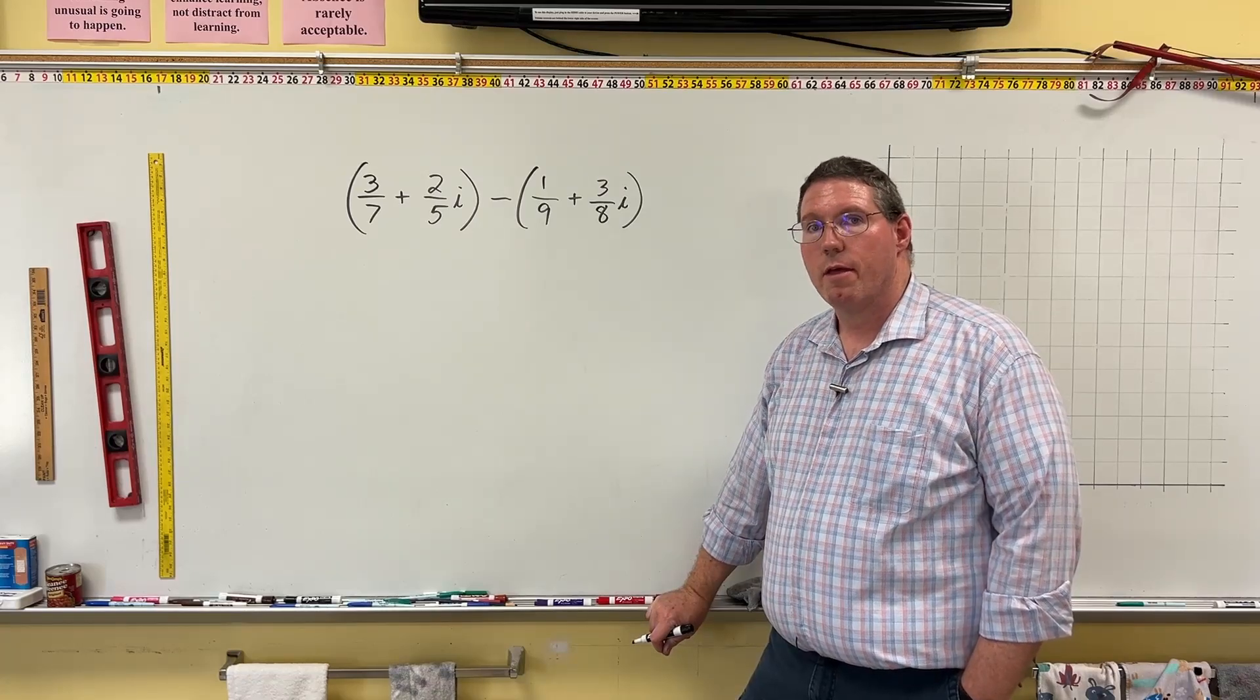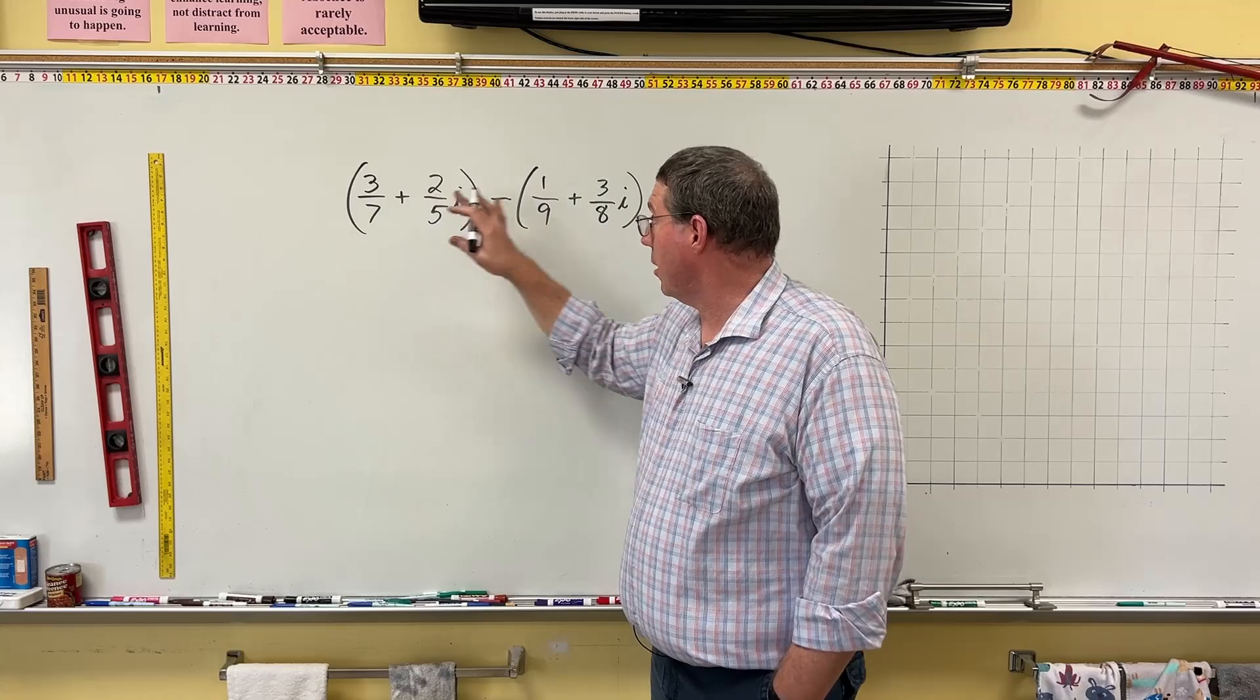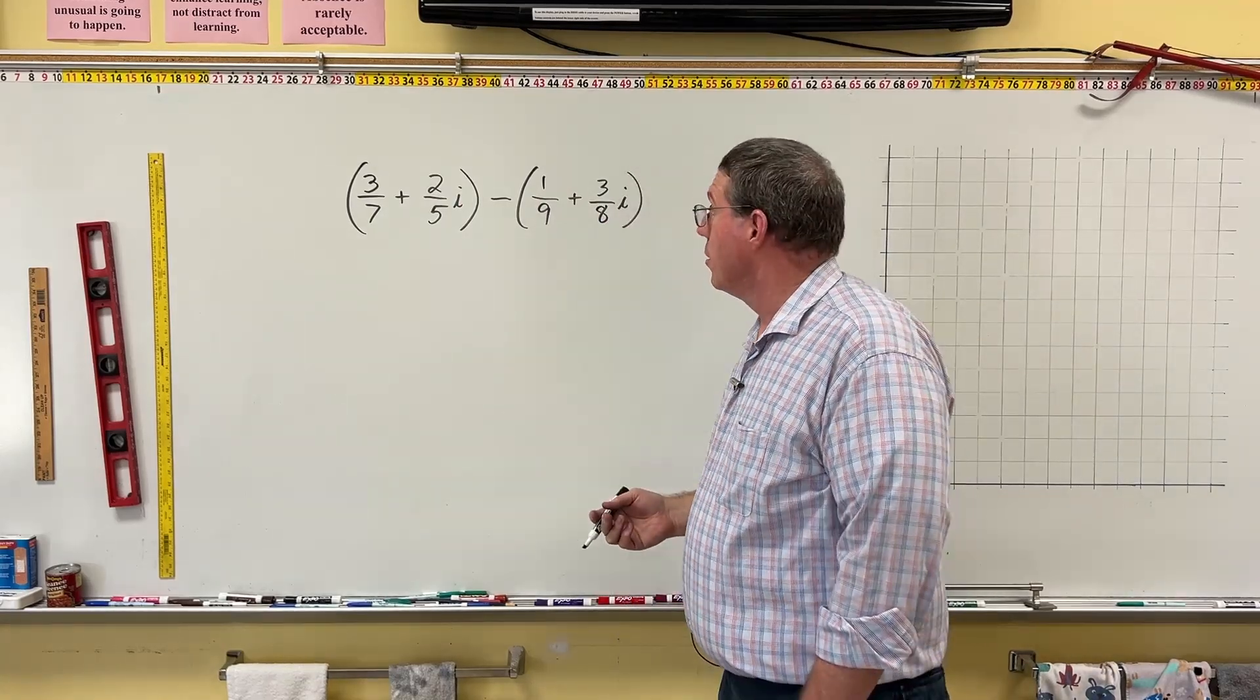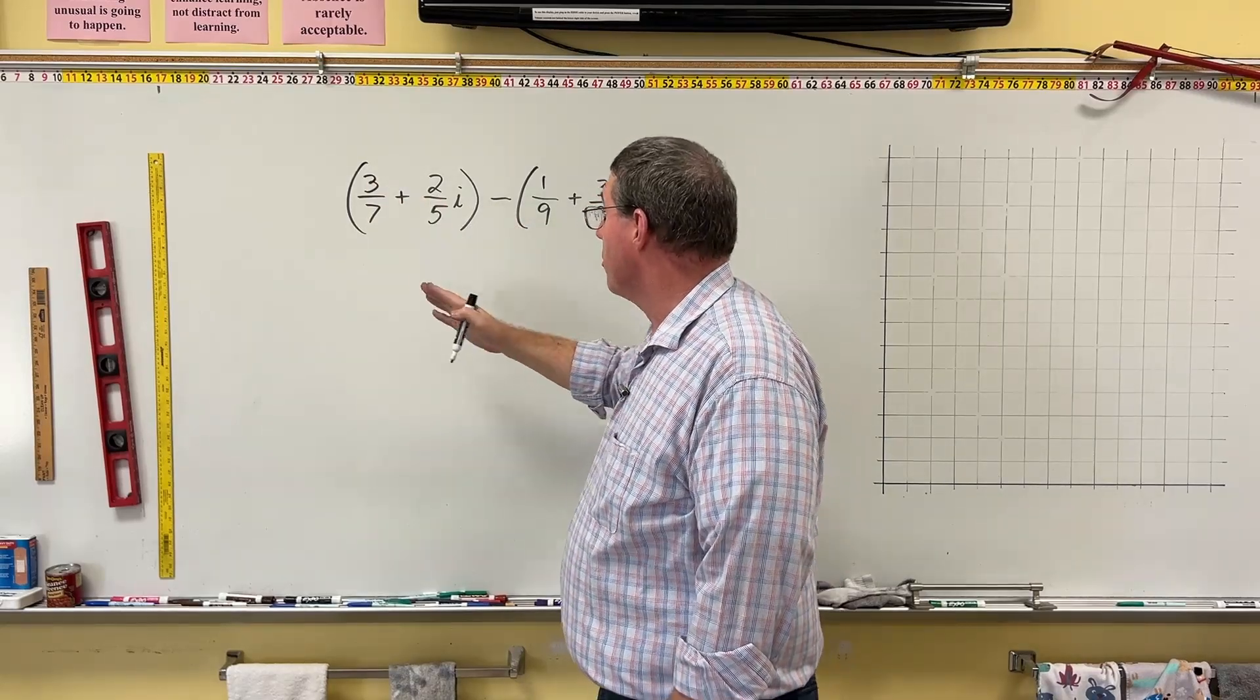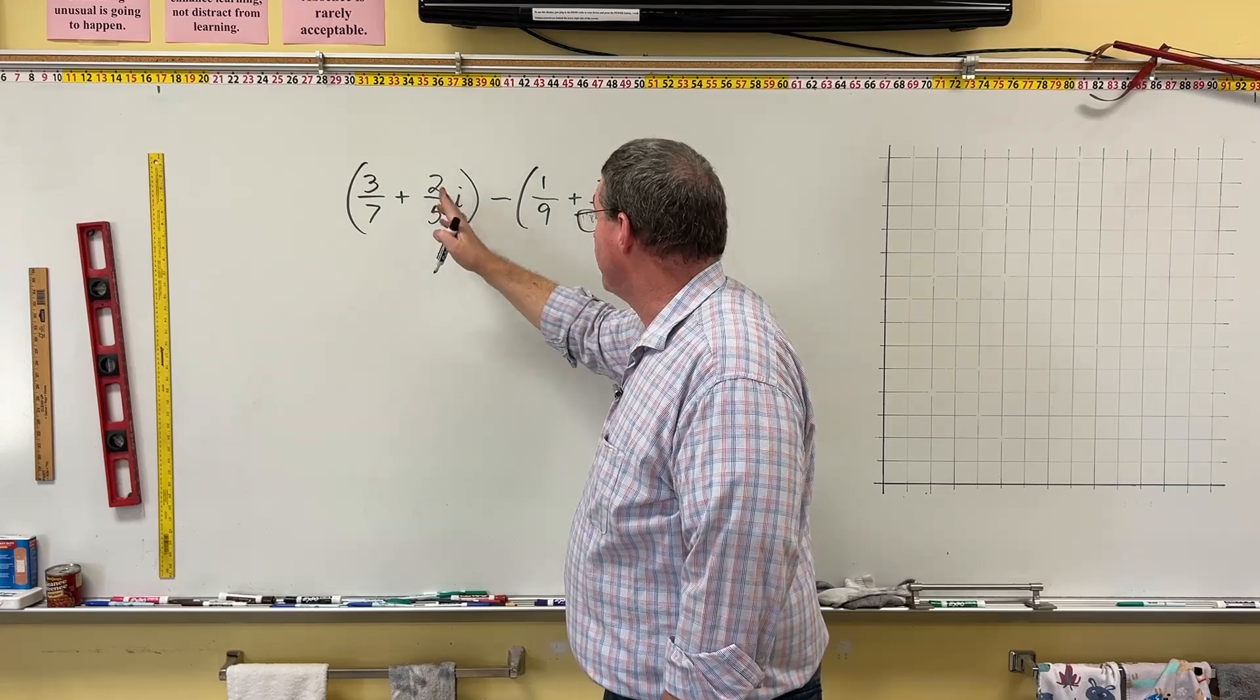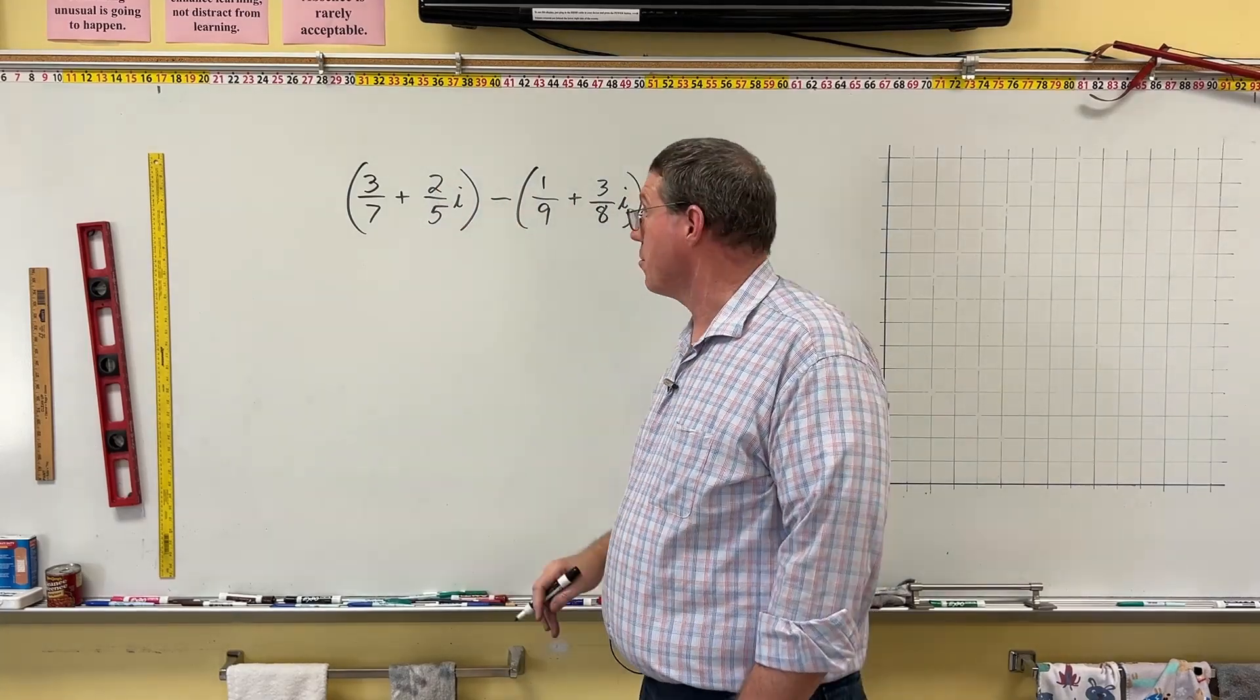Okay, so here is a complex number subtraction, but it has fractions. But we're still going to do it the same way. These are still just numbers. So we're going to do real part minus real part, imaginary part minus imaginary part, and then simplify it and represent our answer.